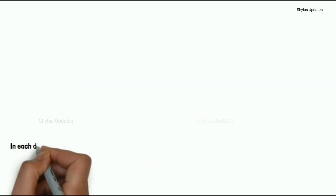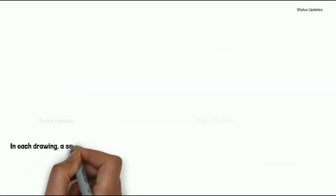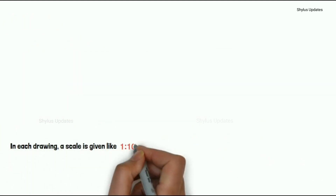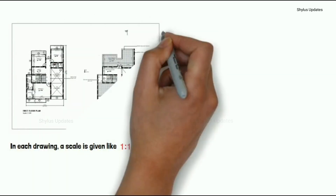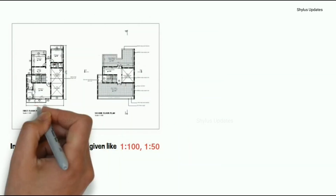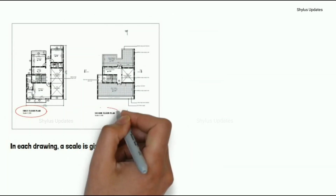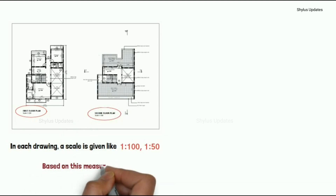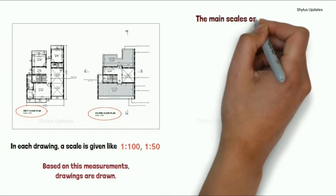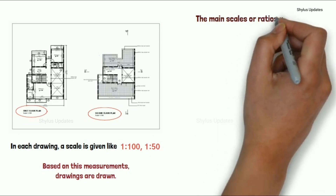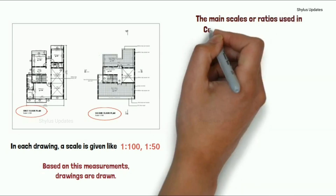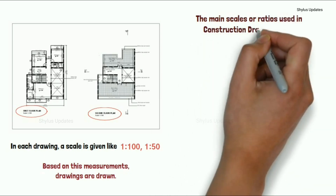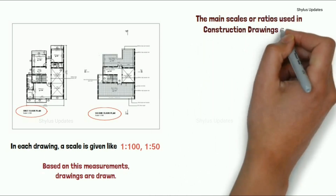In each drawing, a scale is given — like 1 is to 100, or 1 is to 50. You can see in this drawing. Based on these measurements, drawings are drawn. Now let's see about the main scales or ratios used in construction drawings.